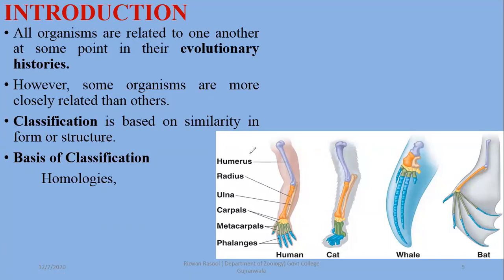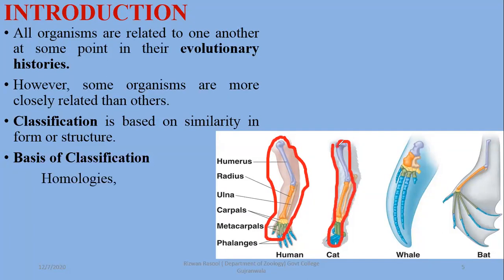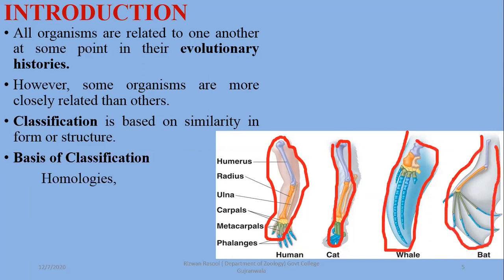Homology means that the basic structures are the same but functions vary, indicating common origin and ancestral features. Organisms with homologous structures can be classified in one group. For example, the four limbs of humans, cats, whales, and bats have the same bone structure, so these four organisms are classified together as mammals.